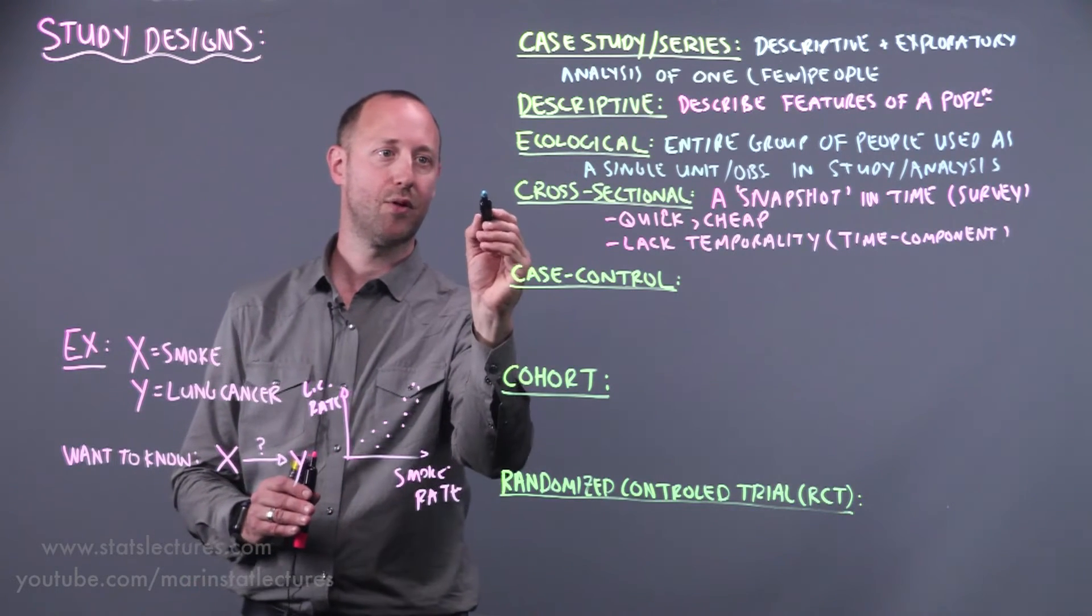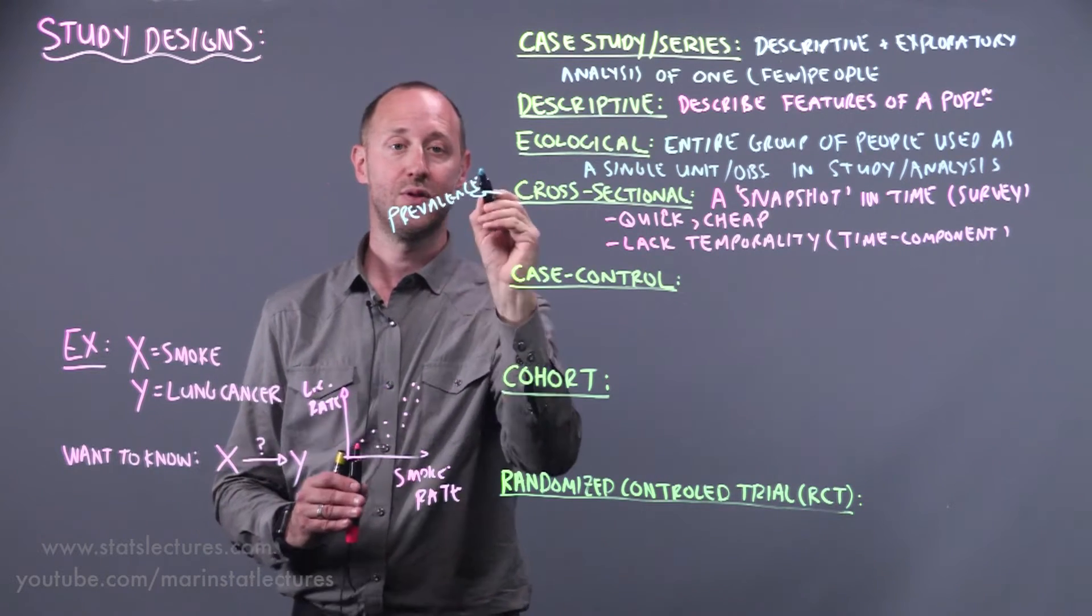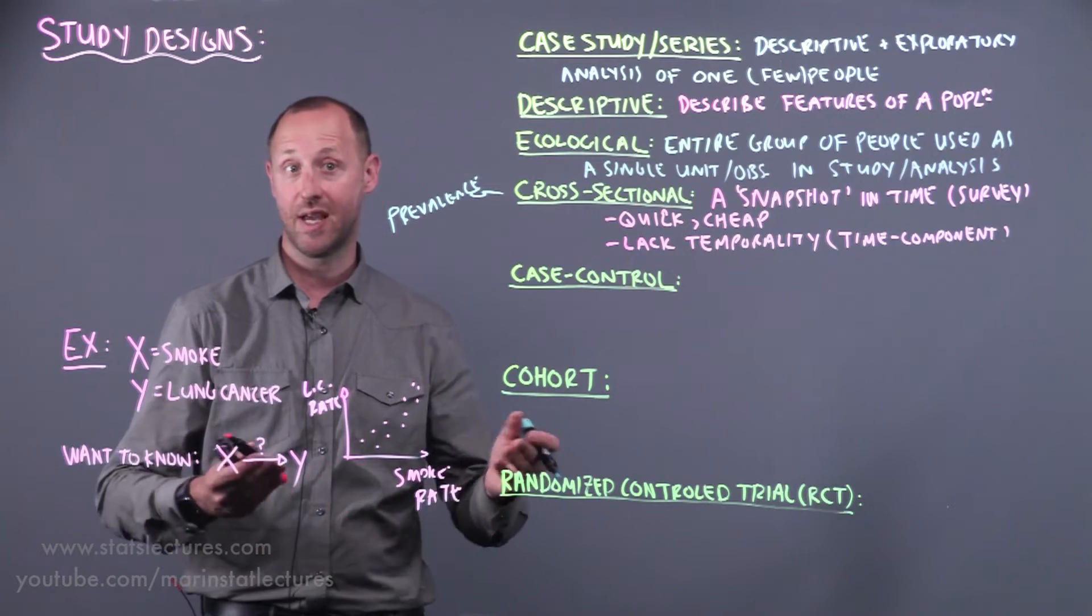One thing that we can get from cross-sectional studies is we can estimate prevalence. We can estimate what's the prevalence of a disease, what percentage of a population has lung cancer.